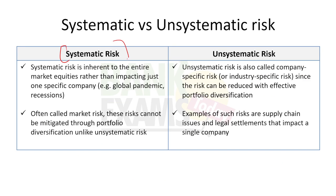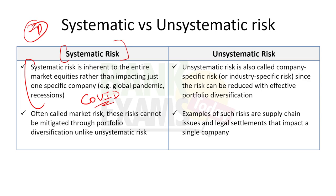What is systematic risk and what is unsystematic risk — very important from an examination point of view. Systematic risk is inherent to the entire market. For example, due to COVID, all stocks were declining by 20, 30, 40 percent — that was a systematic, market-wide risk. You cannot avoid this risk if you are in the market; whichever share or mutual fund you buy, your portfolio will decline.